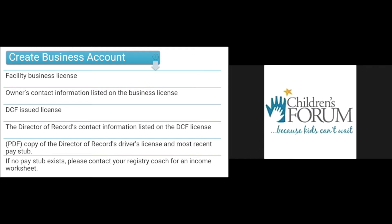To complete step one, you will need to gather the following documents: your business license and the owner's contact information listed on it, your DCF-issued license and the director of record's contact information, a PDF copy of the director of record's driver's license, and their most recent pay stub. If you do not have a pay stub, please contact your registry coach for an income worksheet. This list will also be available in the portal and has been emailed to you by your coach.